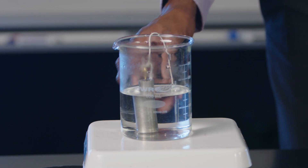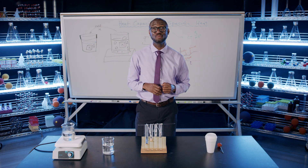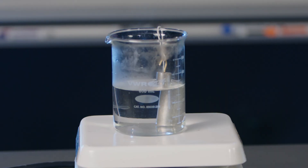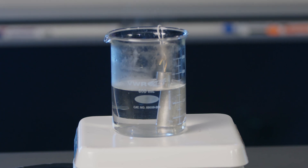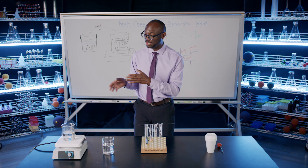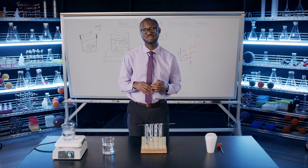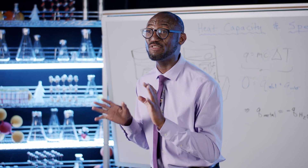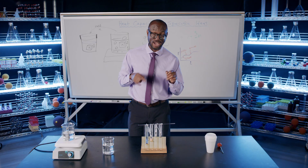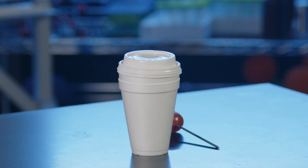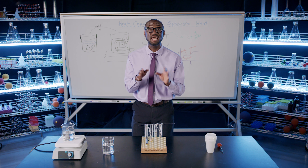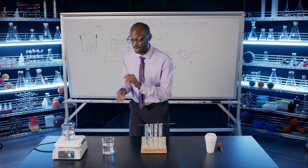I have heated 50 grams of aluminum by putting it in a beaker of boiling water and allowing it to reach the temperature of the water — 100 degrees Celsius. I'm now going to quickly transfer the aluminum into a high-tech calorimeter, a styrofoam cup, containing 100 grams of water at 25 degrees Celsius.